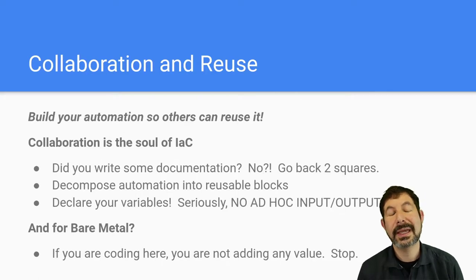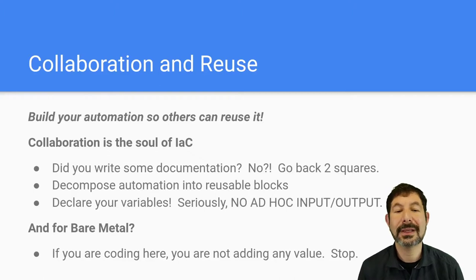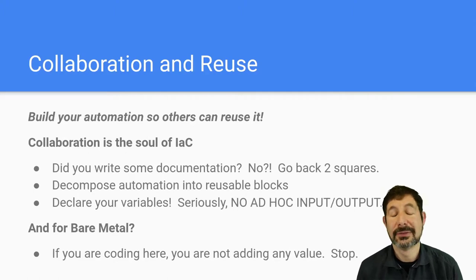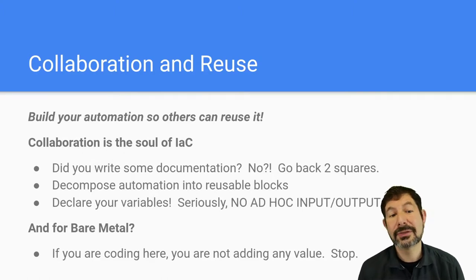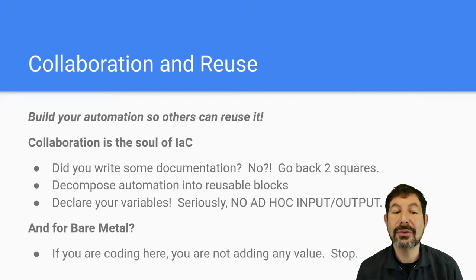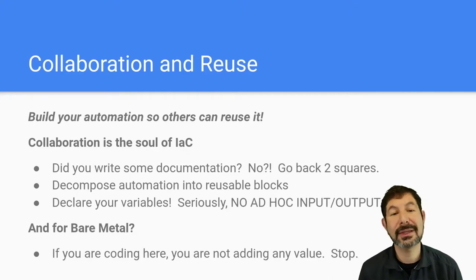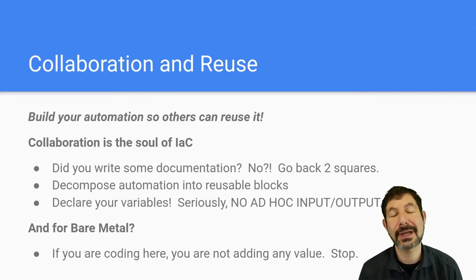Finally, and most importantly: when you're building these systems, build them in a collaborative way. Always build your automation so others can reuse it. If you're building automation that only you understand, then it's not actually automating a system — it's just saving you some work. The soul of infrastructure as code is collaboration. You need to think through how you make this documented. If you haven't documented things, go document the work that you're doing. You must be doing documentation as close to the automation as possible.